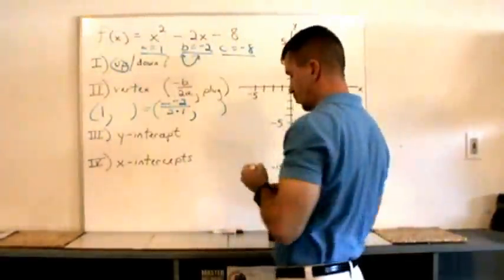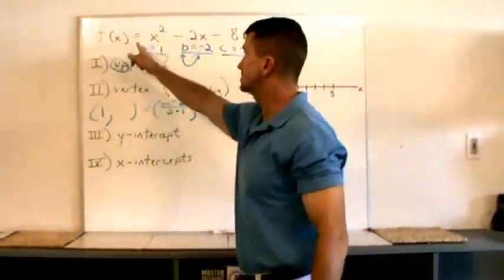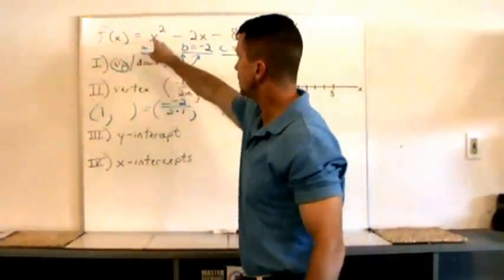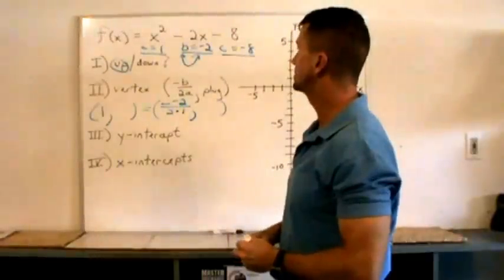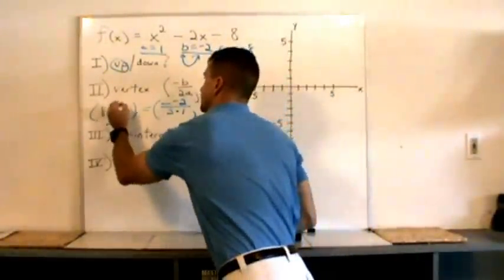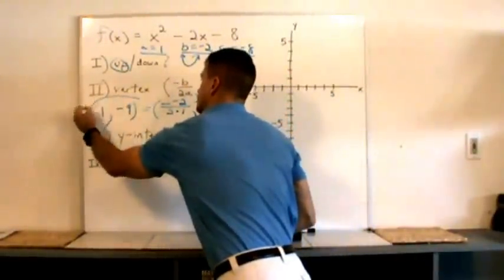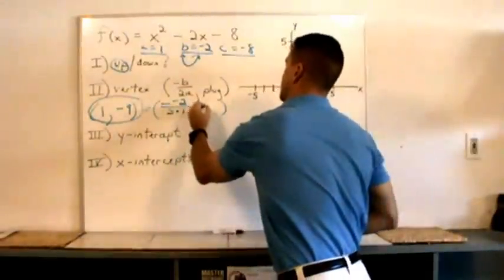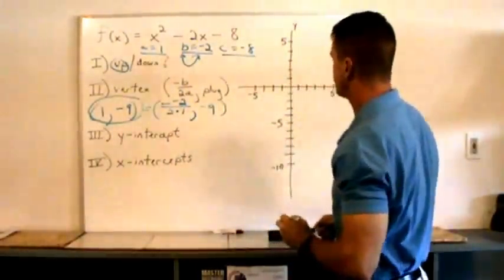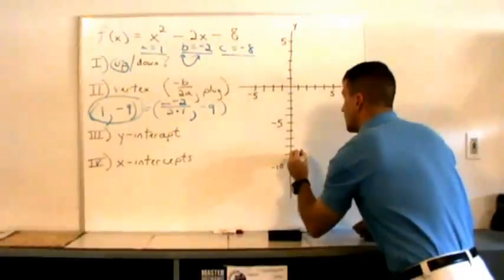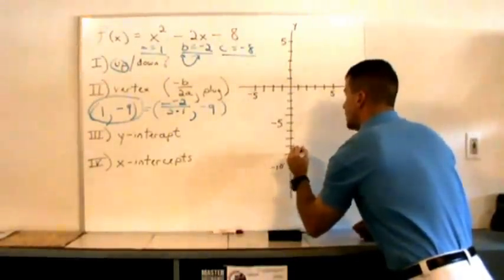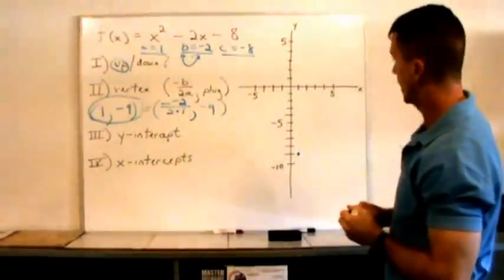Now what we gotta do is substitute the one in here for x to determine what y is. One squared minus two times one, minus eight, that's one minus 10, which is negative nine. So there's our vertex. That's a negative nine, let me plug it back in. I'll plot that. Go over one, and come down negative nine. Go down nine notches.